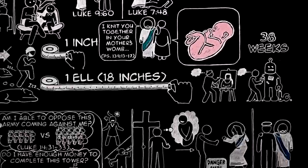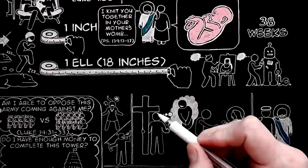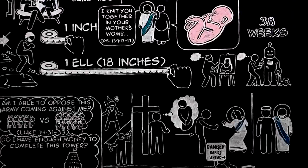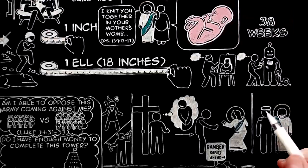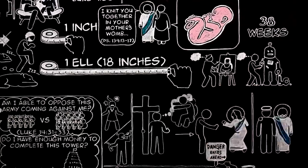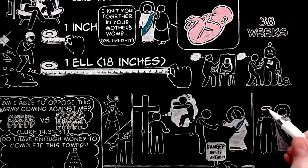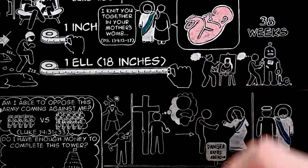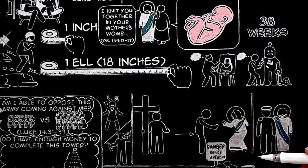Something the same is now happening at a higher level. We may be content to remain what we call ordinary people, but he is determined to carry out a quite different plan. To shrink back from that plan is not humility. It is laziness and cowardice. To submit to it is not conceit or megalomania. It is obedience.